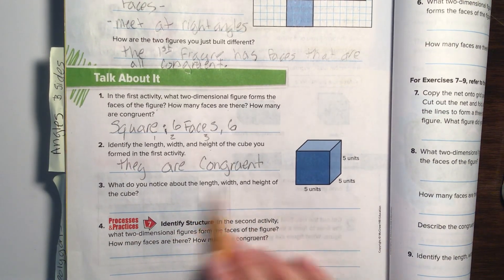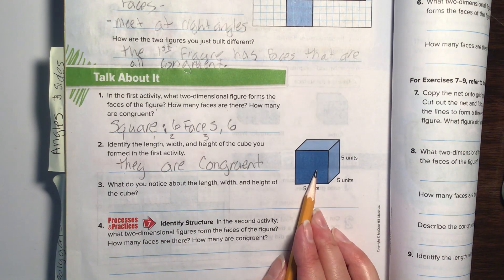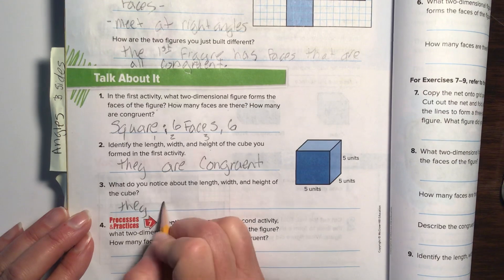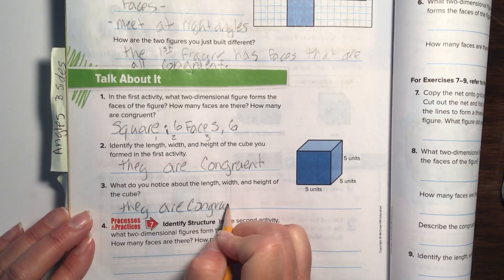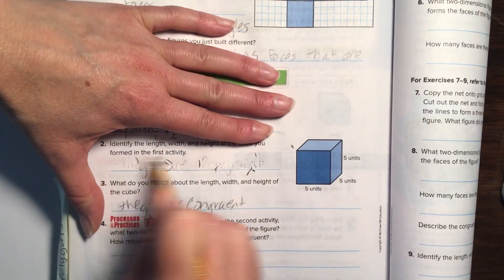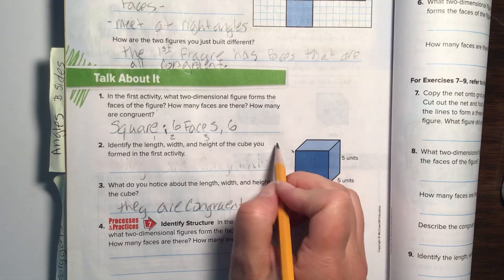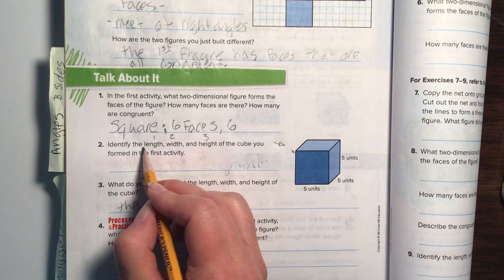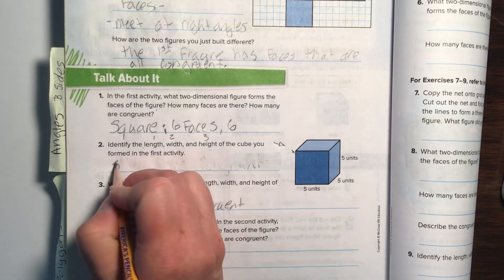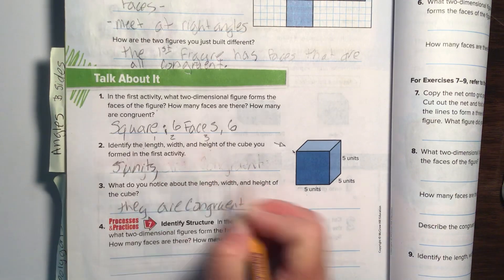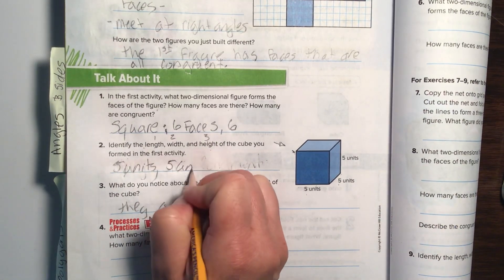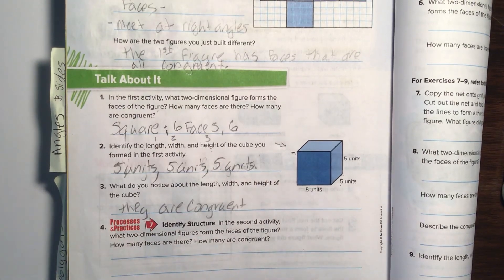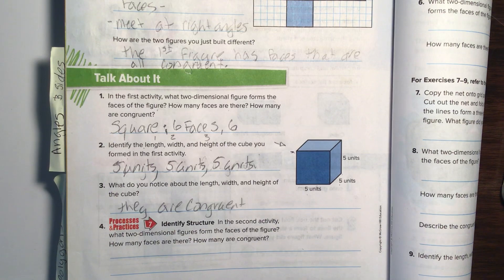What do you notice about the length, width, and height of the cube? And now they're talking about this section right here. They are congruent. I made a mistake. This is what happens when I try to get in a hurry. Sorry, folks. They actually want you to see what you notice about this cube. I apologize. Well, let's look at it again. The length is five units, and the width is five units, and the height is five units. So, our original answer of they are all congruent would have worked, but they actually want us to label it with units. Sorry about that, folks. I'm human.